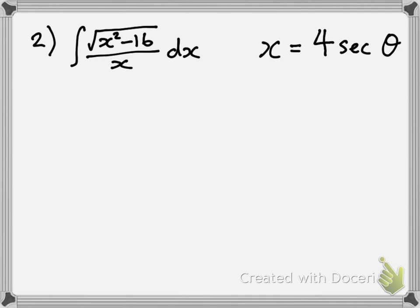So take a minute to ask yourself what is the next thing you need to do. That's right, you need to find out what dx is in terms of theta, and that you get from differentiating your x equals 4 secant theta. If you differentiate that, you get 4 secant theta tangent theta d theta.